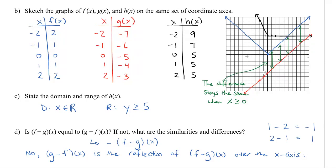You can try this on your own by taking g of x and subtracting f of x to verify it is indeed a reflection of the black graph over the x-axis — and you will find that it is.